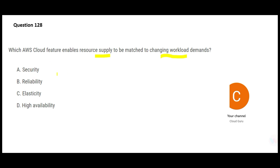Security just addresses the safety net — it does not talk about matching supply and demand, so A is wrong. Reliability means the system is up and running for its entire duration, highly reliable, doesn't go down, and the data is trusted. Reliability will not help you with supply and demand, so B is also wrong.